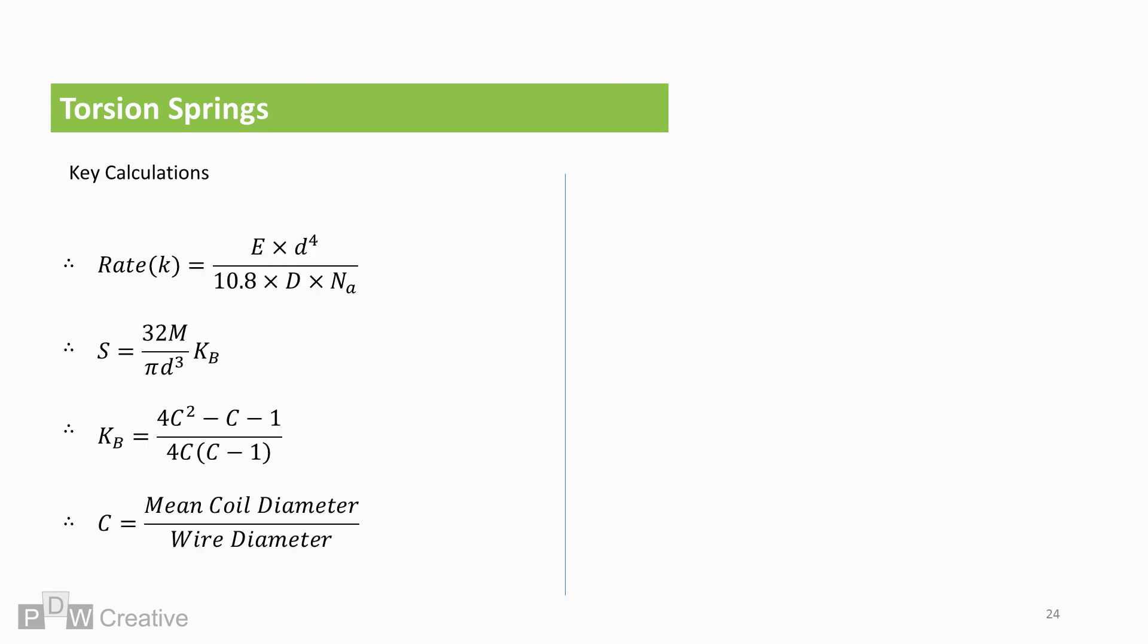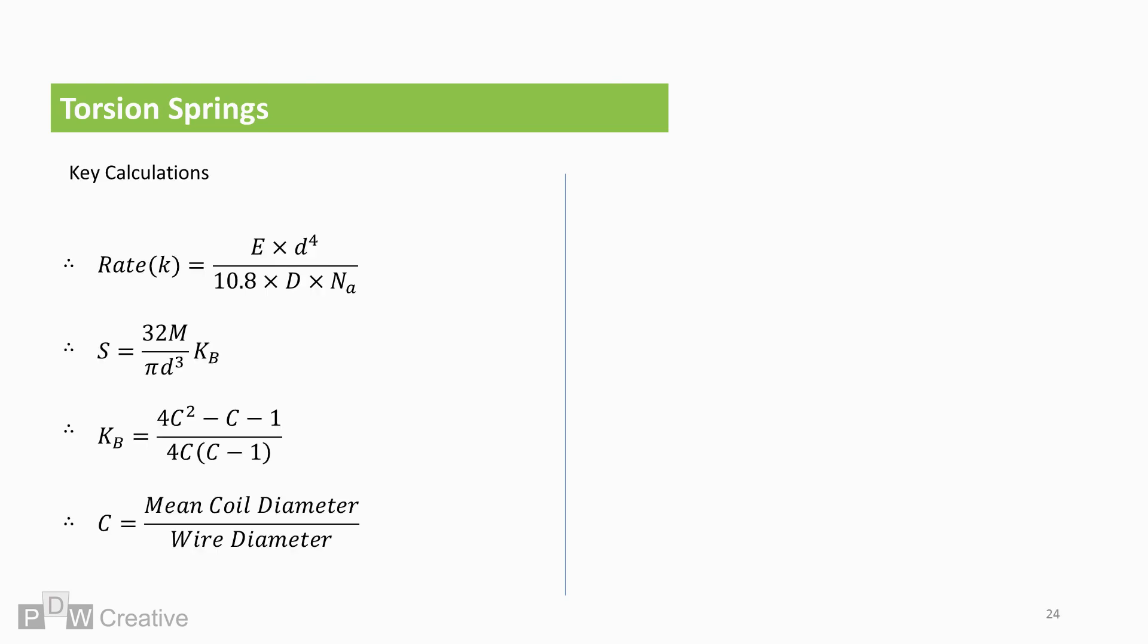The key calculations affecting the spring design include rate and stress. Whereas the key design influences include the torque at the min and max working angles. And spring diameter and length which are dictated by the part or assembly the spring will fit into.